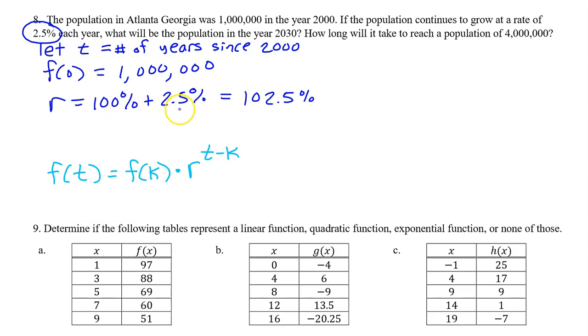100% plus 2.5% is 102.5%. When we substitute this back into the formula, it's best to write r as a decimal instead of a percent. So we will move the decimal point two times to the left, and r becomes 1.025.